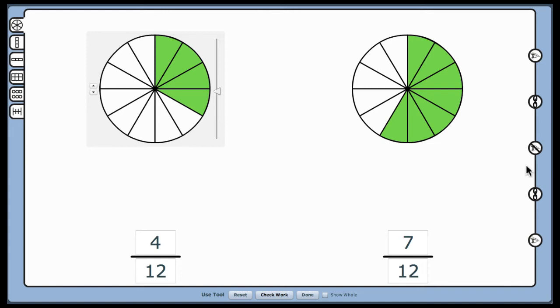Once both models contain common denominators, explain that there is a procedure that can be used to find the common denominator without relying on models. We simply multiply the first fraction by a multiple of one. In this case, four-fourths.